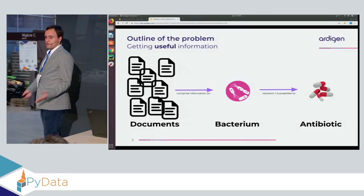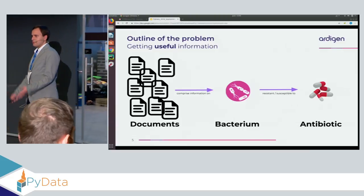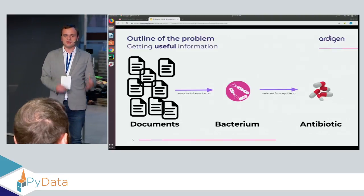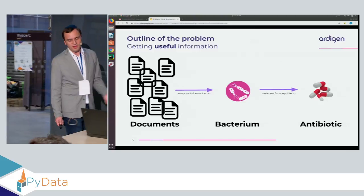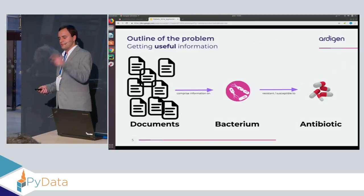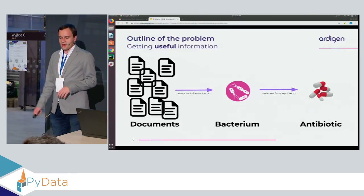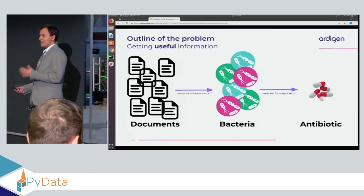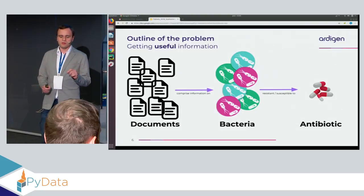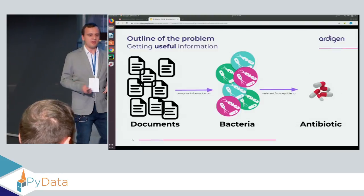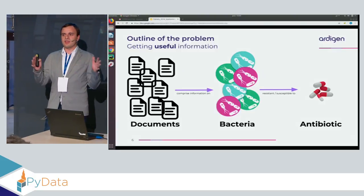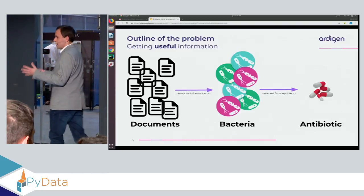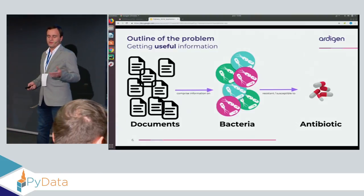We can slightly complicate the problem by adding more documents. You just retrieve more of them, you need to read and scan all of them — but it's still probably manageable by a domain expert. But let me complicate it one step further and add multiple strains. Then it's getting more and more entangled, but we still have the hook of the antibiotic name to first retrieve documents, then search within the text, and figure out the interaction.